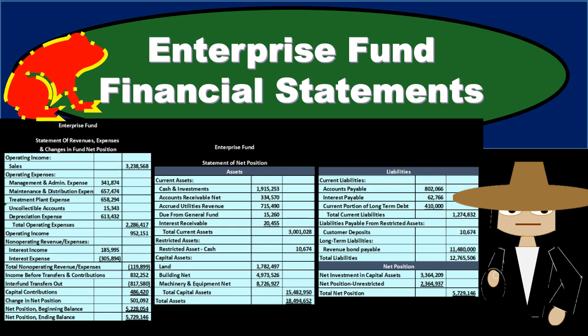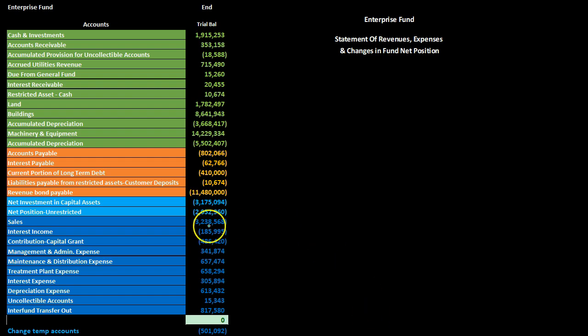We are on an enterprise fund, accrual basis, with a proprietary type fund that has customers. The trial balance information is on the left-hand side: assets are in green, liabilities in orange, and the light blue represents what would be the equity section in a for-profit organization — here called net position. The dark blue below represents temporary income statement accounts, which close out to net position. The trial balance is in balance with debits minus credits equaling zero.